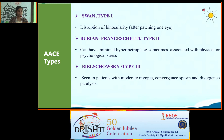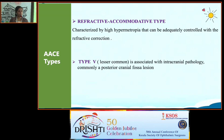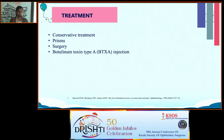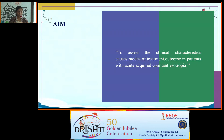Acute comitant esotropia is divided into five types. Type 1 is caused by disruption of binocularity. Type 2, the Bielschowsky type, involves minimal hypermetropia and is sometimes associated with physical or psychological stress. Type 3, Bielschowsky's type, is seen in moderate myopia with convergence spasm and divergence paralysis. Type 4 is refractive-accommodative, related to high hypermetropia controlled with refractive correction. Type 5, the least common, is associated with posterior cranial fossa tumors. Treatment options include spectacles, prisms, surgery, and botulinum toxin A injection.